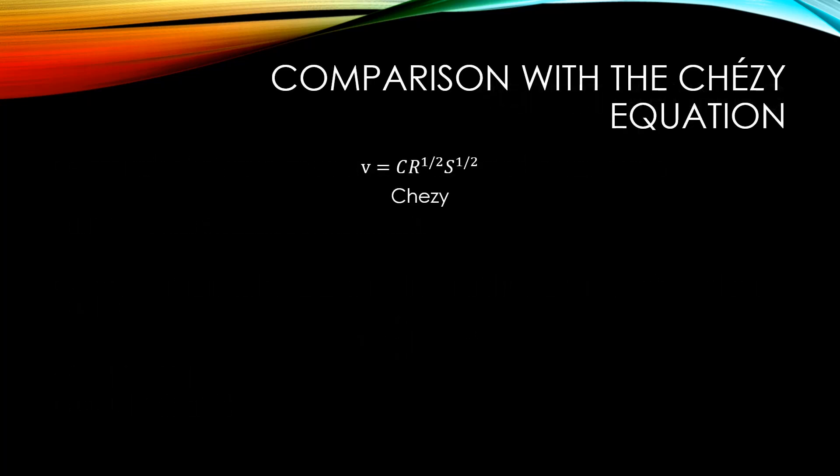Let's compare Manning's equation to the Chezy equation. The Chezy equation relates the velocity to the Chezy coefficient c, the hydraulic radius, and the longitudinal slope. If we combine both equations, we can find a value for the Chezy coefficient c, and relate it to Kutter's roughness coefficient n.